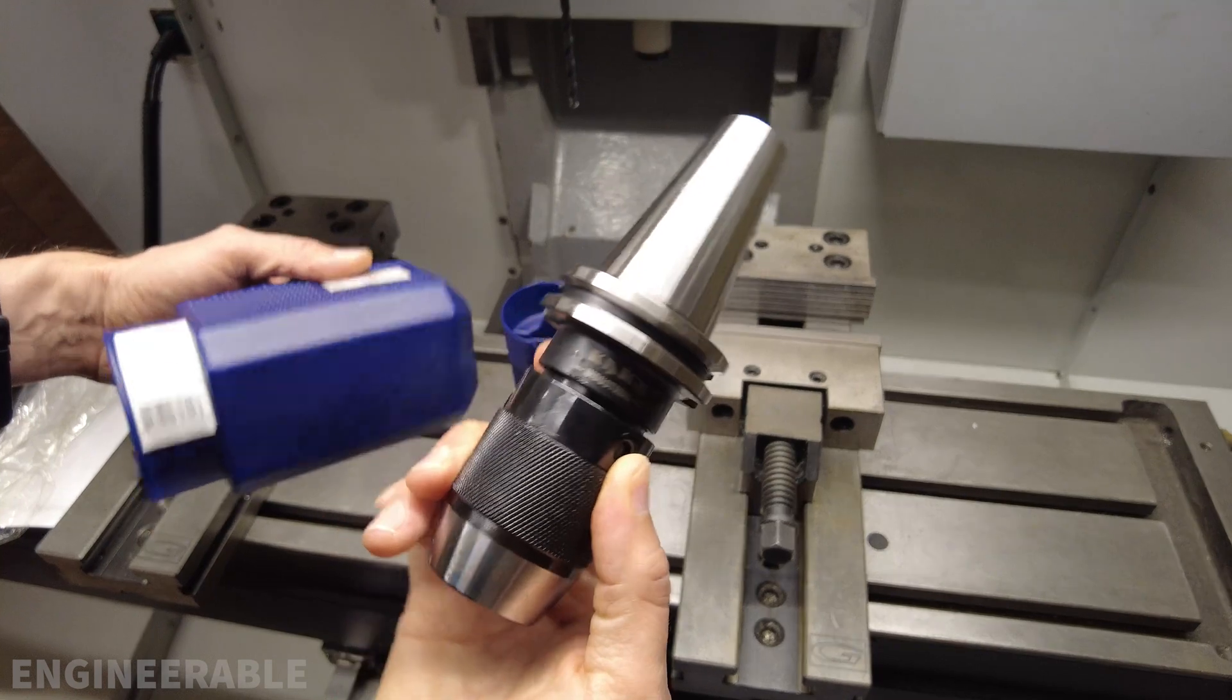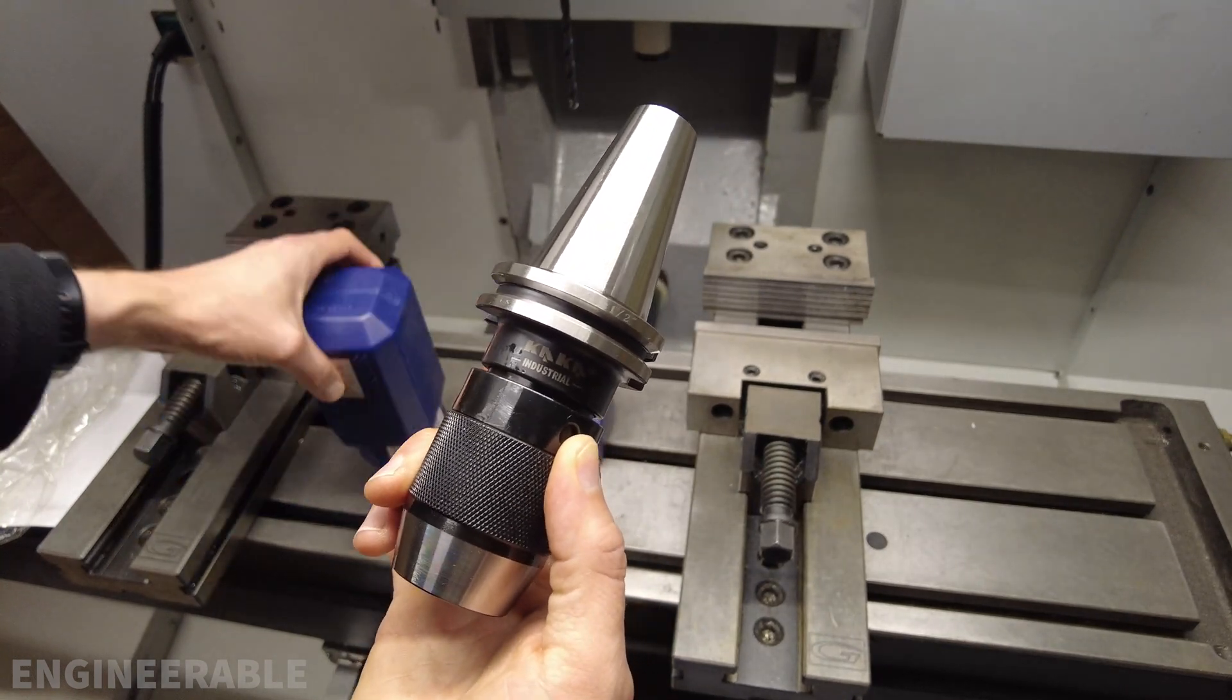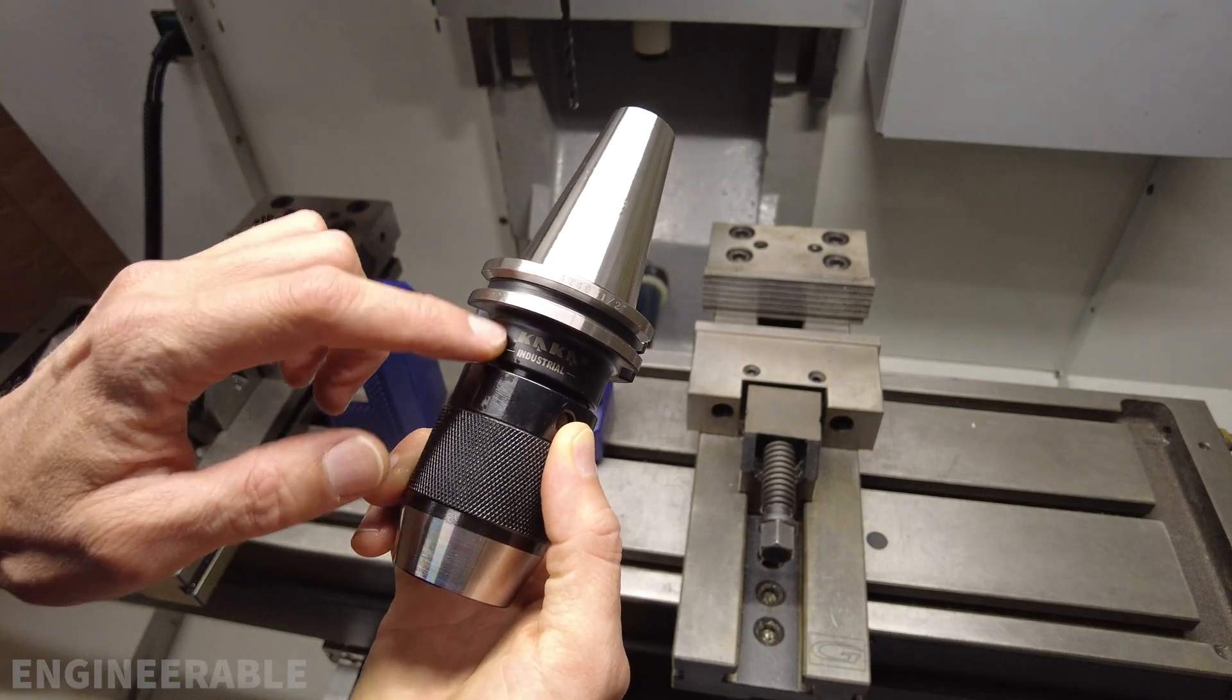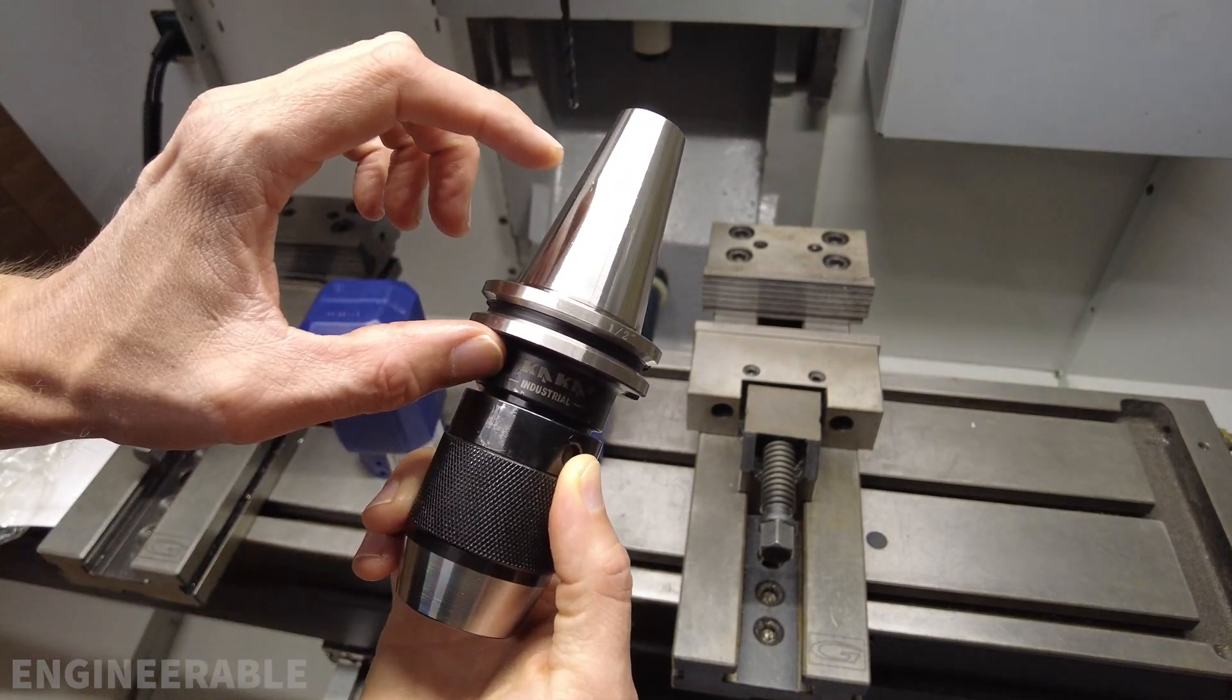This keyless drill chuck is designed for drills from 1/32nd up to 1 1/2 inch and it's an integrated keyless drill chuck, so it's integrated into the cat 40 shank.